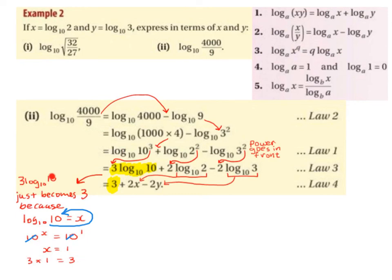There is a general rule we can follow: Law 4 tells us that log base a of a always gives us 1. So if the base and the number are the same — for example, log base 20 of 20, log base 18 of 18, log base 50 of 50 — they always give us 1. Since we had 3 multiplied by log base 10 of 10, log base 10 of 10 becomes 1, and 3 times 1 is 3.